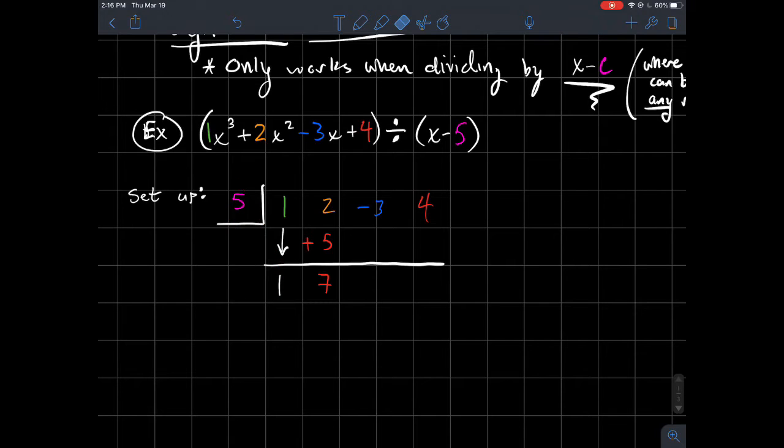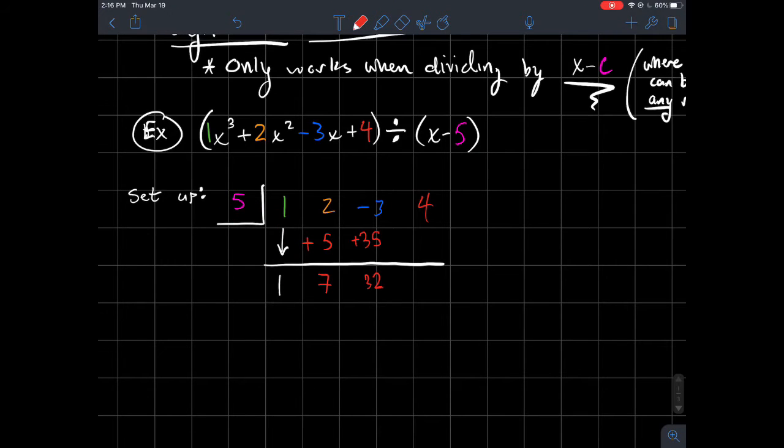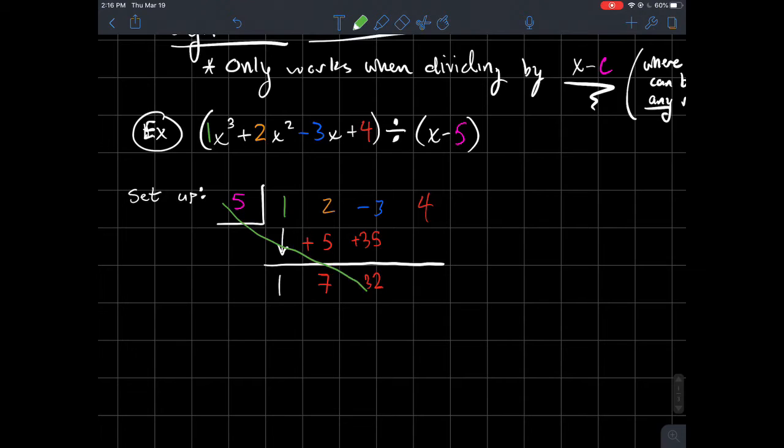So what I'll do is we'll just repeat the process. I'm going to take that 5, and I'm going to multiply it by the 7. And I'm going to get 35 if I do that. And I just add it right here. And if I do that, that would be 32, I think. And then the last thing, I'll do it one more time. I'm going to take that 5, and I'm going to multiply it by 32.